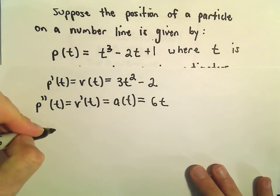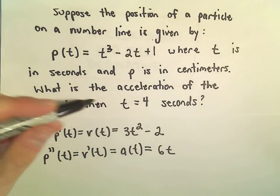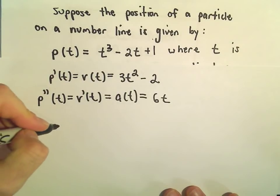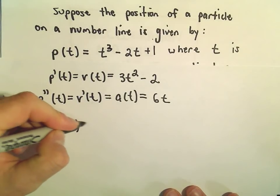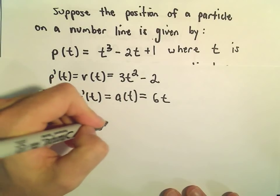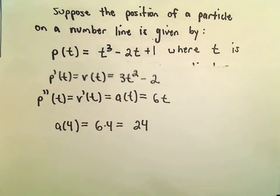And now all we have to do, we just want to figure out the acceleration of the object when t equals 4. So we'll just plug 4 into our function. So we'll have 6 times 4, or that'll give us 24.